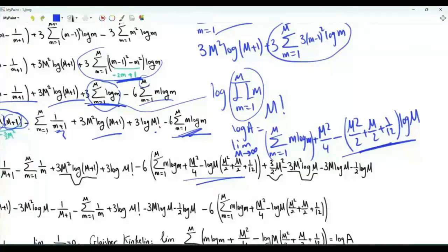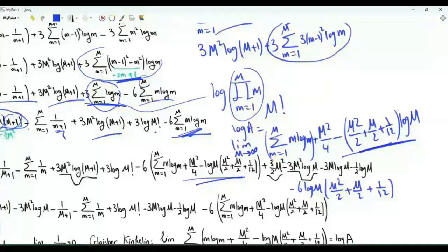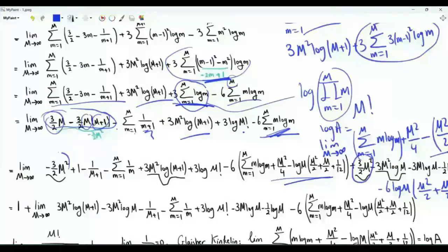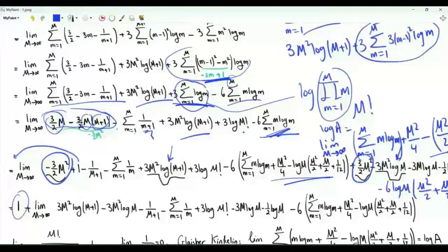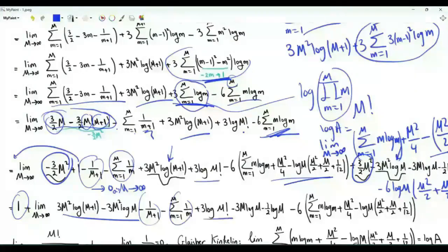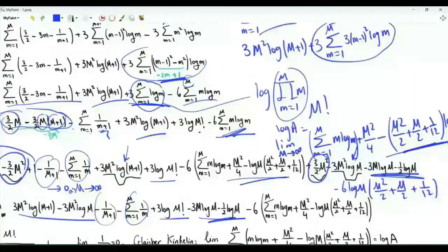We subtract 6 log M times (M²/2 + M/2 + 1/12), giving −3M² log M − 3M log M − (1/2) log M. There is cancellation: 3M²/2 and −3M²/2 cancel. The terms 3M² log(M+1) and −3M² log M remain, along with terms tending to 0, the harmonic sum, and 3 log(M!). As M → ∞, this bracket tends to log A.